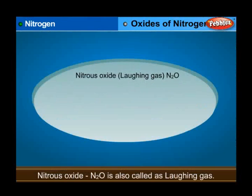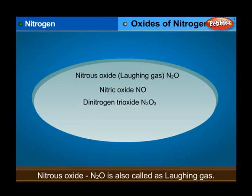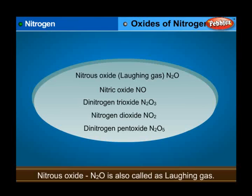Oxides of nitrogen are: nitrogen oxide (laughing gas, N2O), nitric oxide (NO), dinitrogen trioxide (N2O3), nitrogen dioxide (NO2), and dinitrogen pentoxide (N2O5).